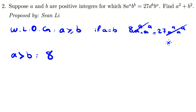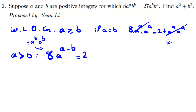Now we simplify. We have a^a·b^b on the left. Since a is greater than b, if we divide both sides by a^b and b^b, we get 8·a^(a−b) on the left. On the right, 27·a^b cancels, leaving 27·b^(a−b).